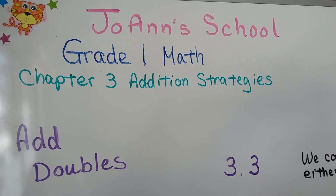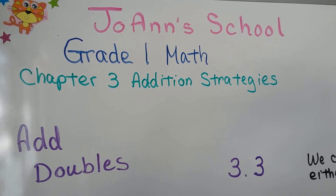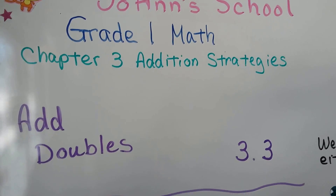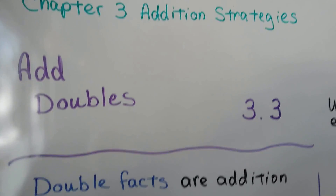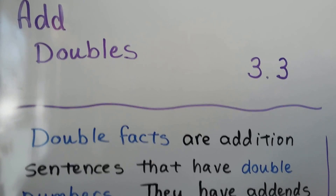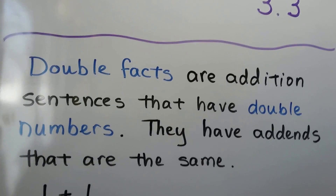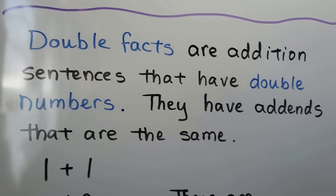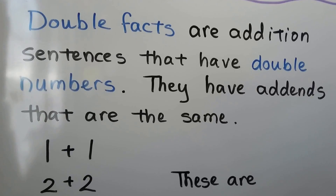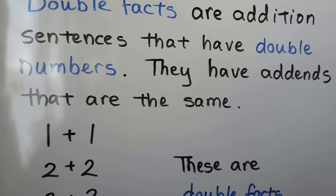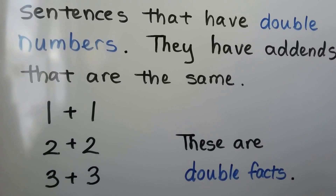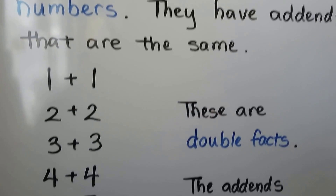We're going to be adding doubles. This is lesson 3.3. Double facts are addition sentences that have double numbers. They have addends that are the same.